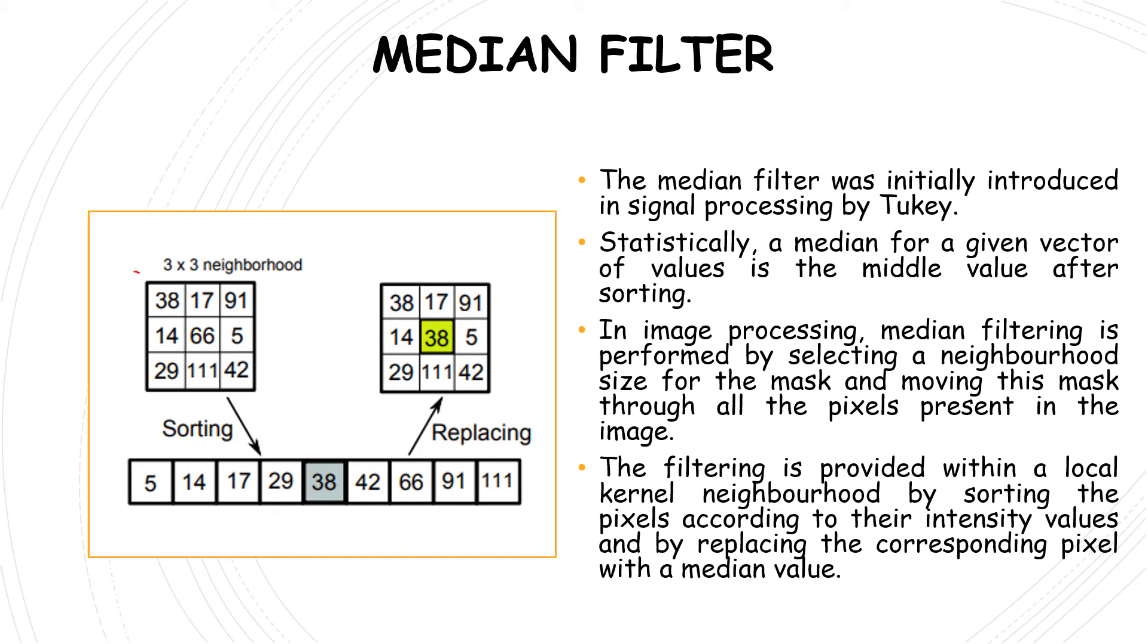This is the example we have considered. We place a 3×3 mask on top of the pixels starting from the top left corner. The next step is to arrange it in ascending order. The pixel values here are arranged in ascending value: 5, 14, 17, 29, 38, 42, 66, 91, and 111. We find the middle value, which after sorting is 38. The center value is replaced by this middle value, which is 38.